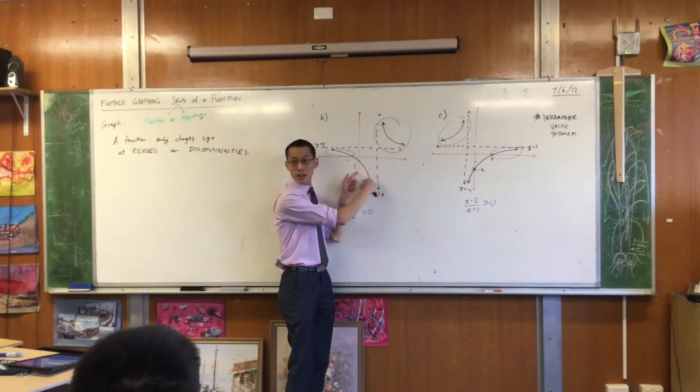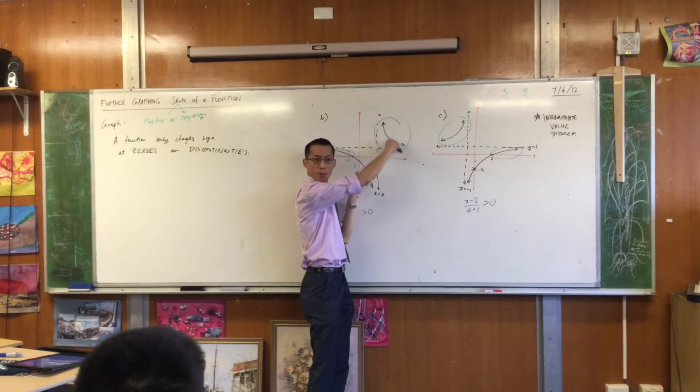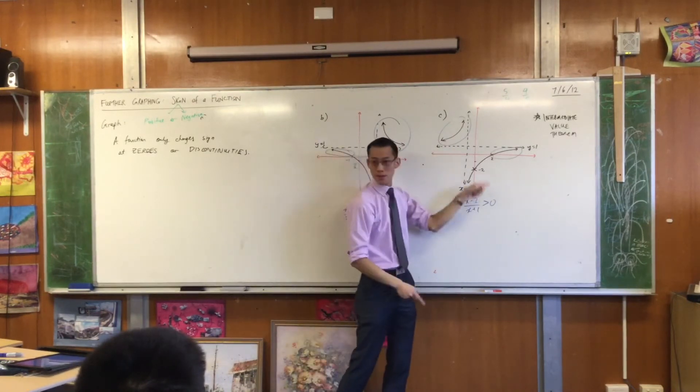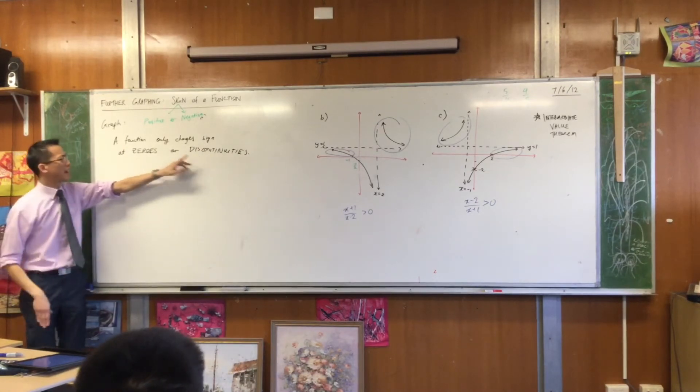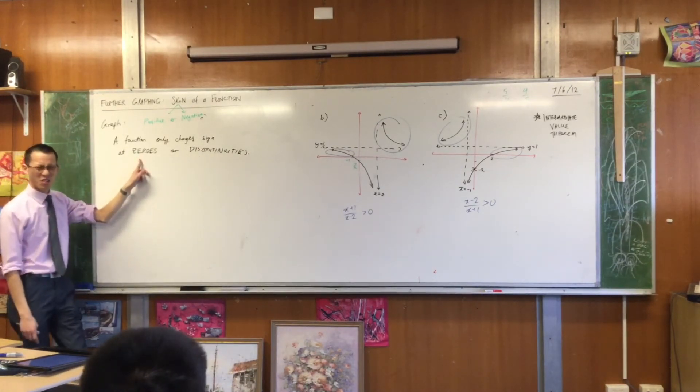On this side here, you're negative, and on this side here, you're positive, and vice versa for this one. Does that make sense? That's one of the places where a function can change sign. What are these things, do you think? What's that about?